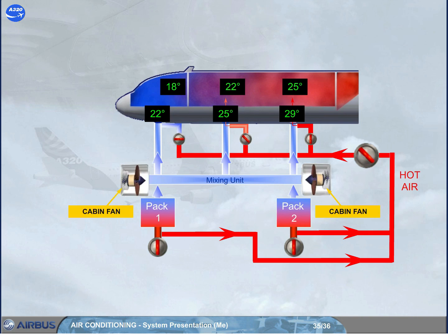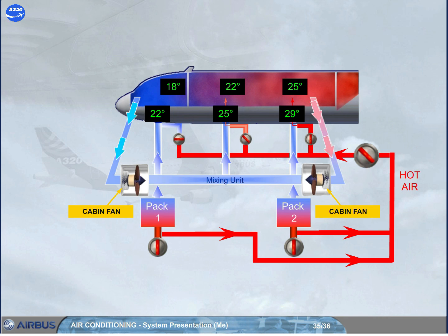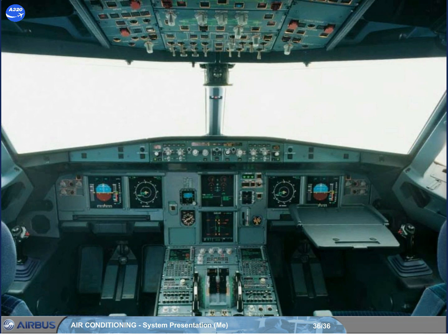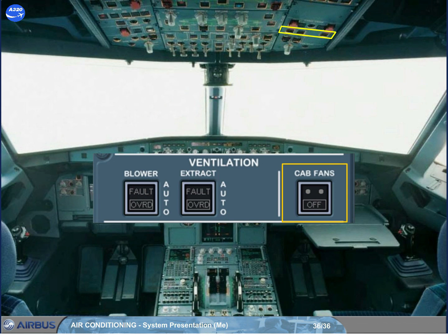Two cabin fans are installed to recycle cabin air and therefore save fuel. These fans establish a recirculation flow of air from the three aircraft zones to the mixing unit. In normal operation, there is no ECAM indication related to the cabin fans. The cabin fans push button switch on the ventilation panel controls the cabin fans, and can be used to switch the fans off in response to an ECAM procedure.